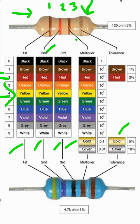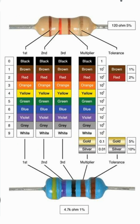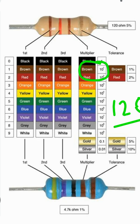Depending on the color, we choose the value of the multiplier. The third color is brown again, and the value of a brown multiplier is 10 to the power of 1. So the value of this resistor will be: first color brown = 1, second color red = 2, giving us 12, and now the multiplier is 10 to the power 1 which is 10. So 12 multiplied by 10 equals 120 ohm.